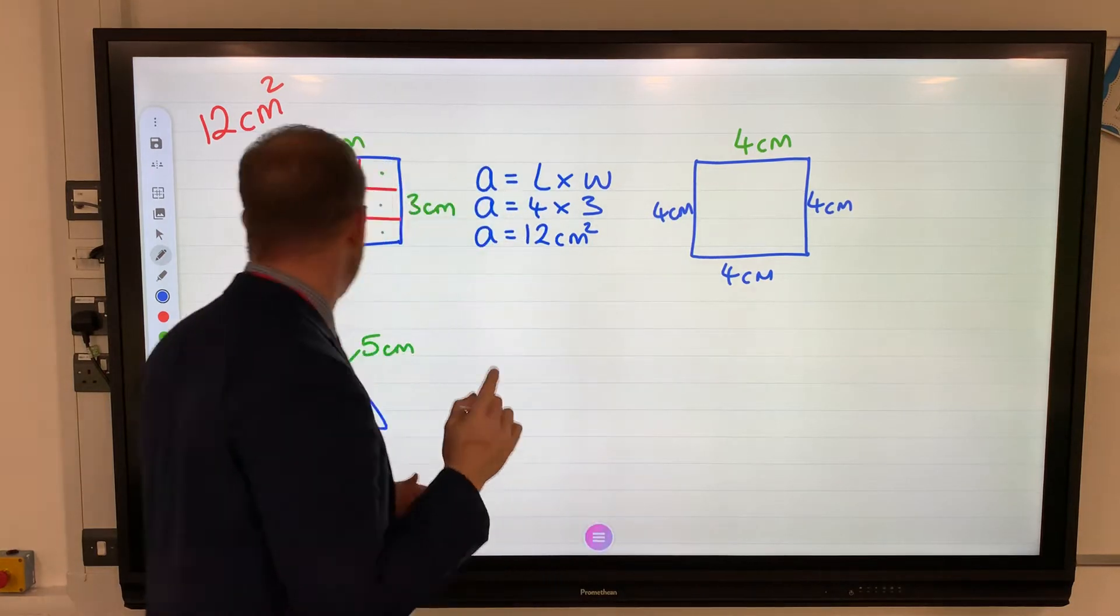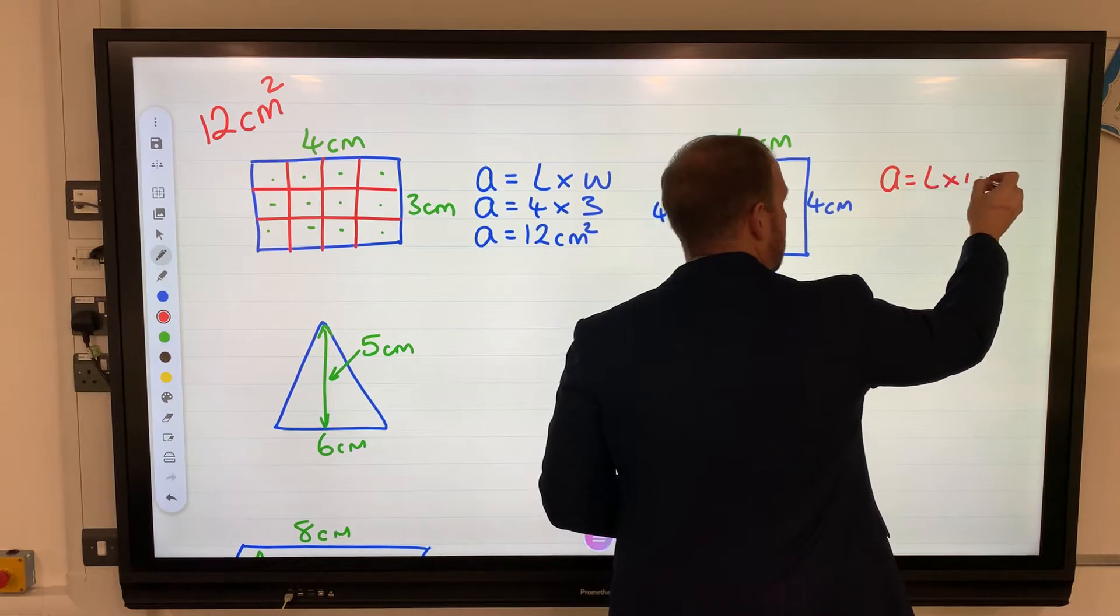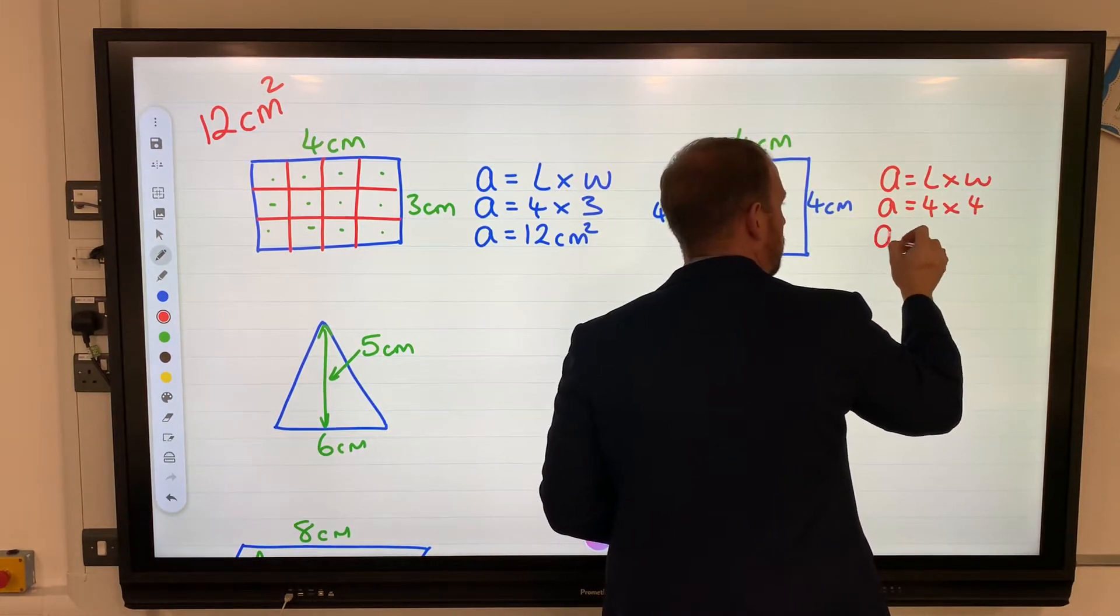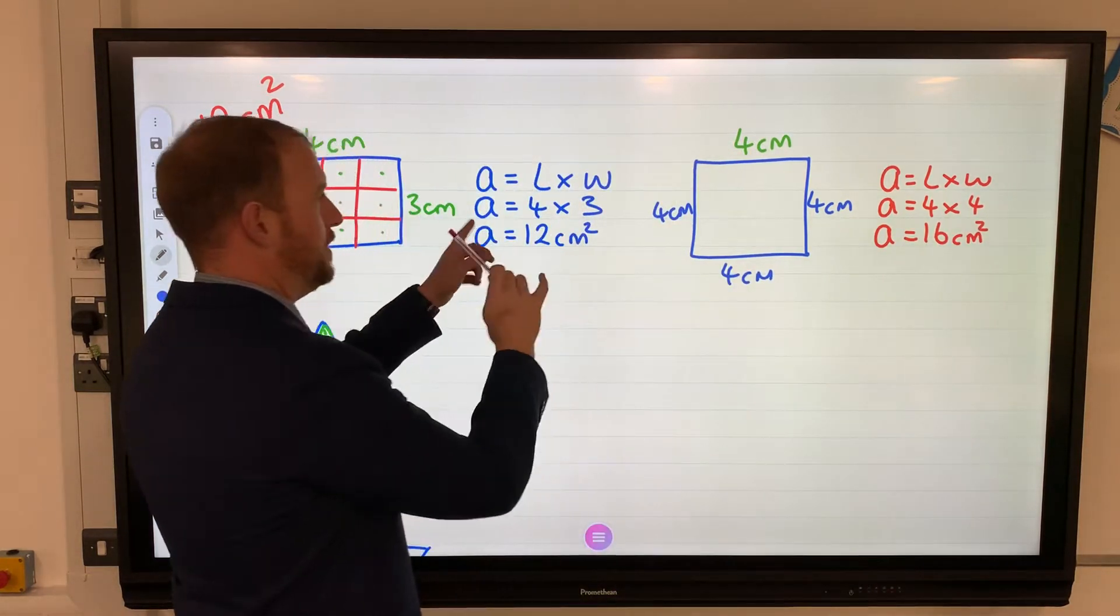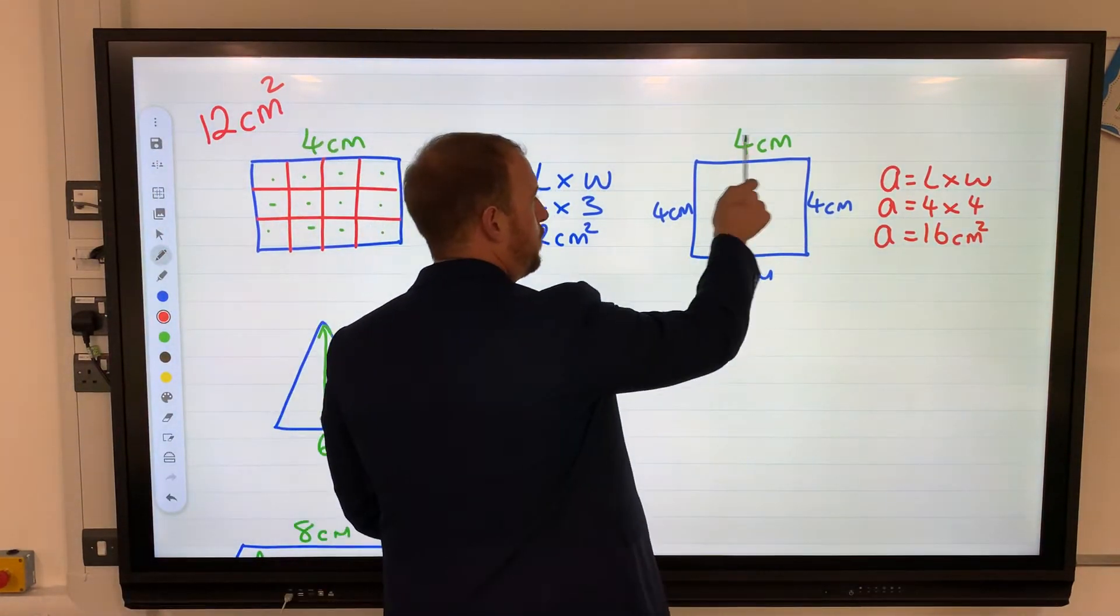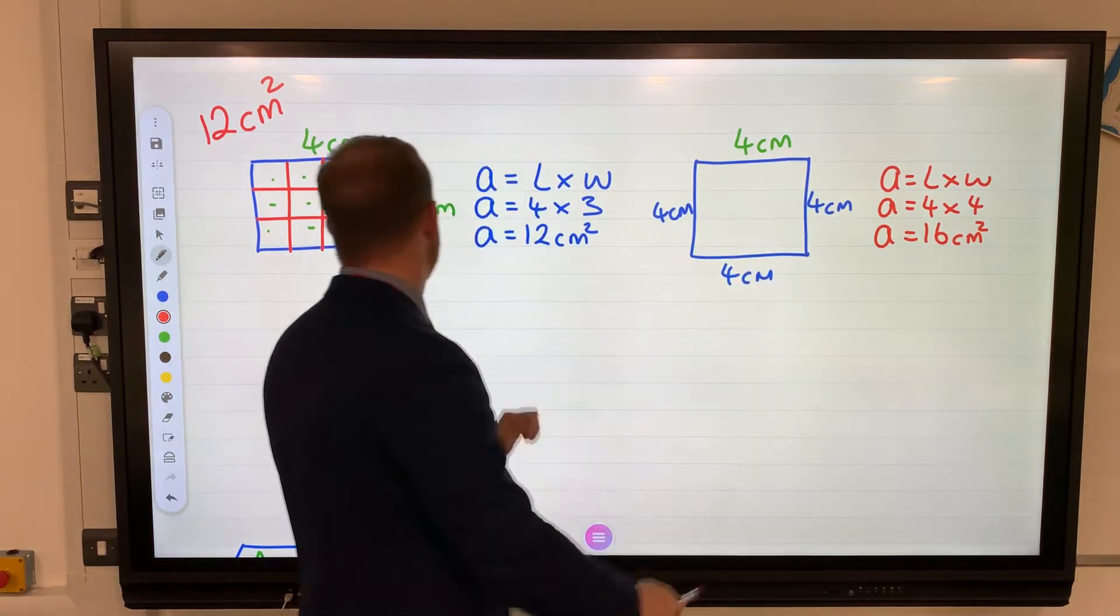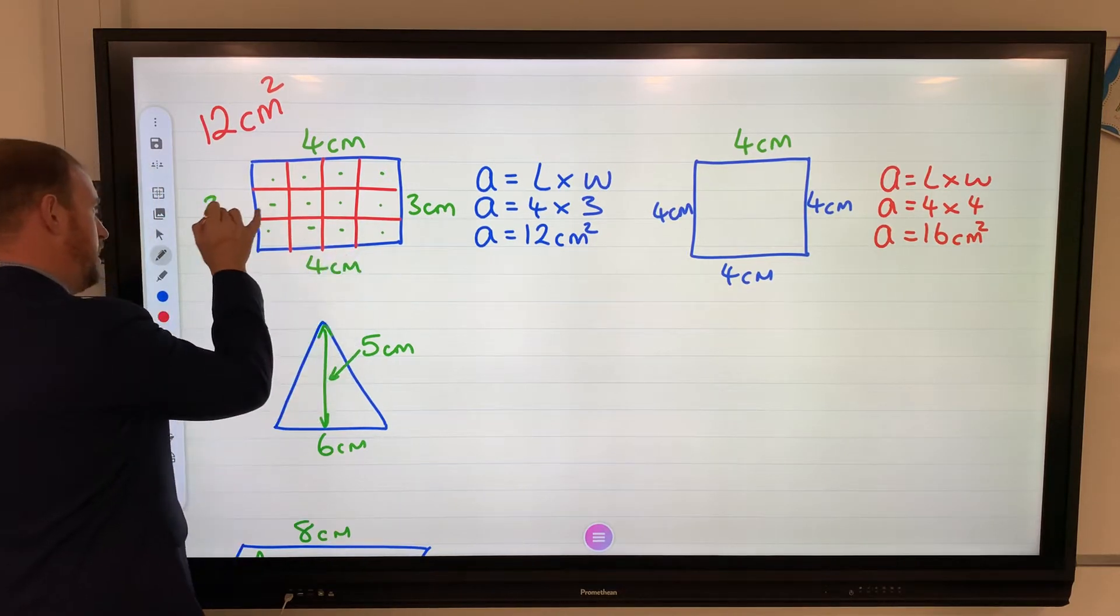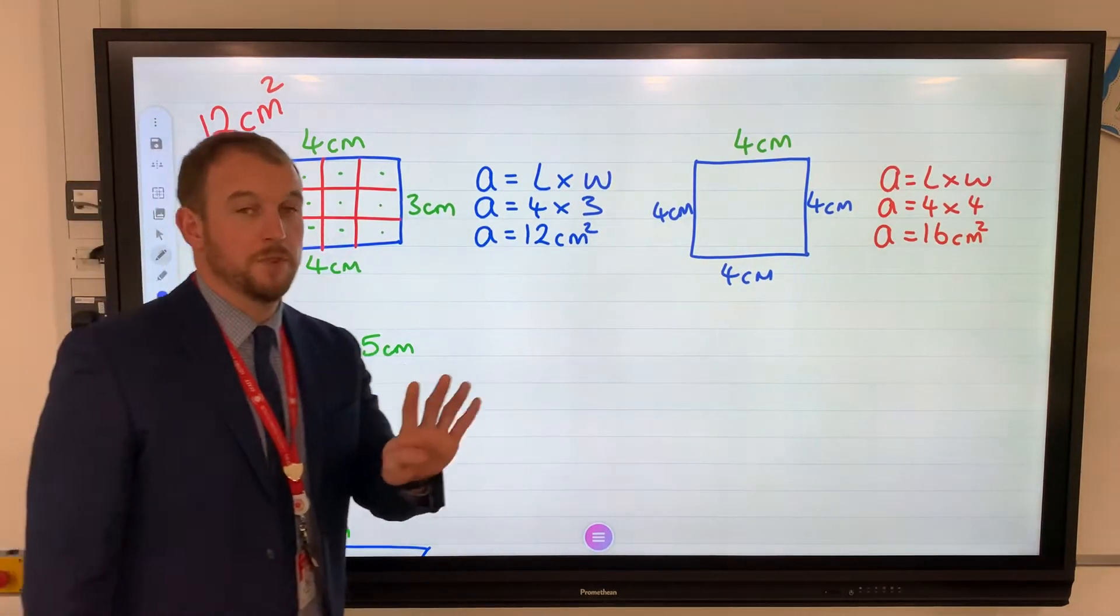Your formula will always be length times length. But the numbers are the same, so it's four times four to make 16 centimeters squared. We have the same formula for a rectangle and the square. Even though I've got four numbers on the outside, I'm only going to use the length and the width. If the question is given with all four numbers written on it, you're not going to use all four - just the length and the width.